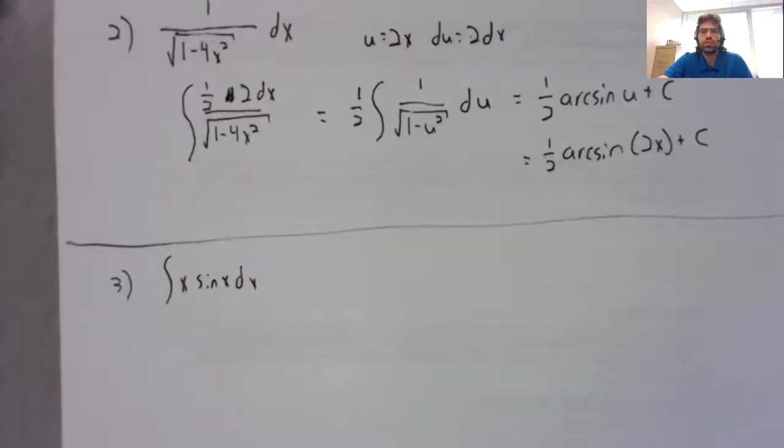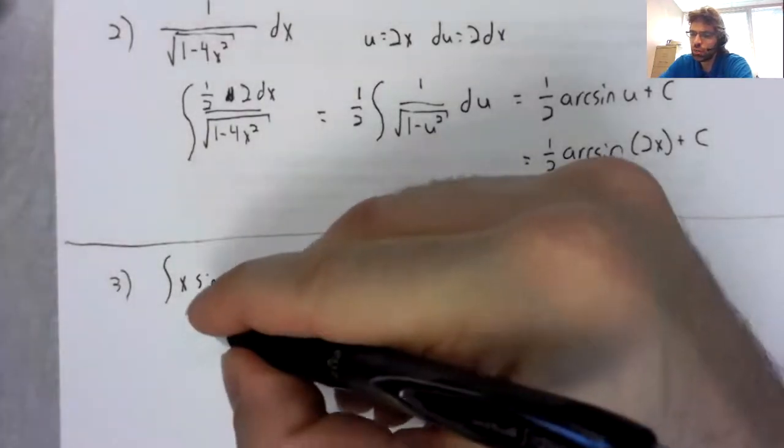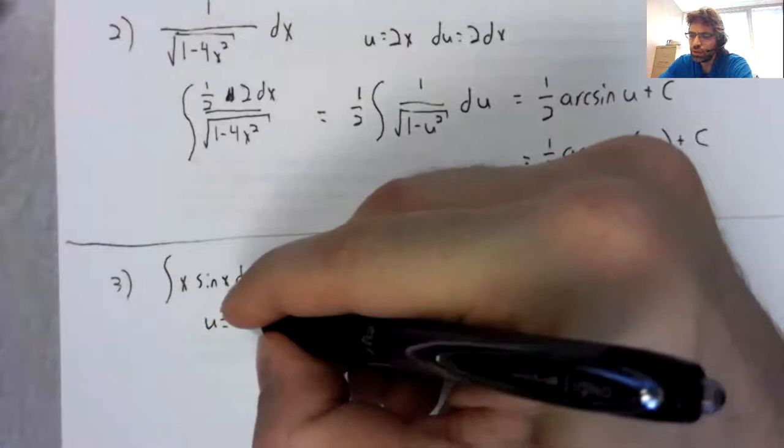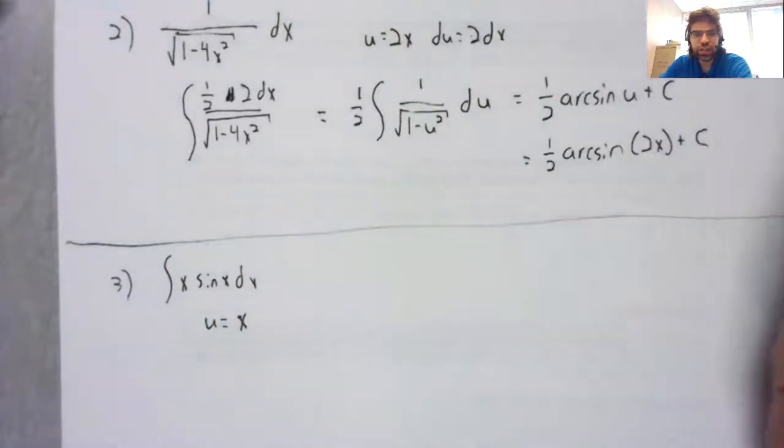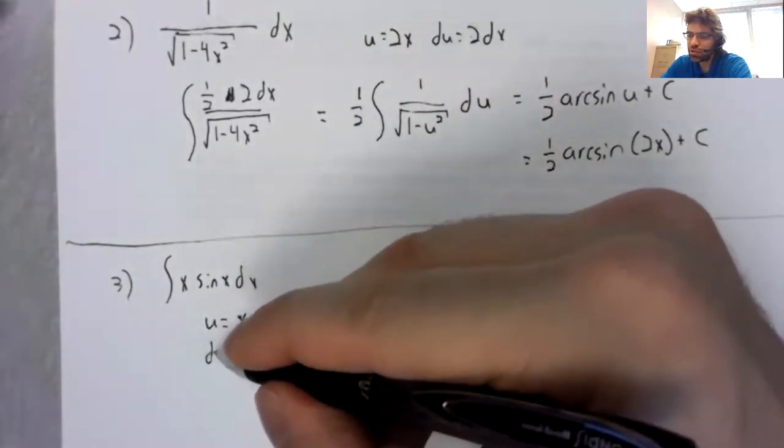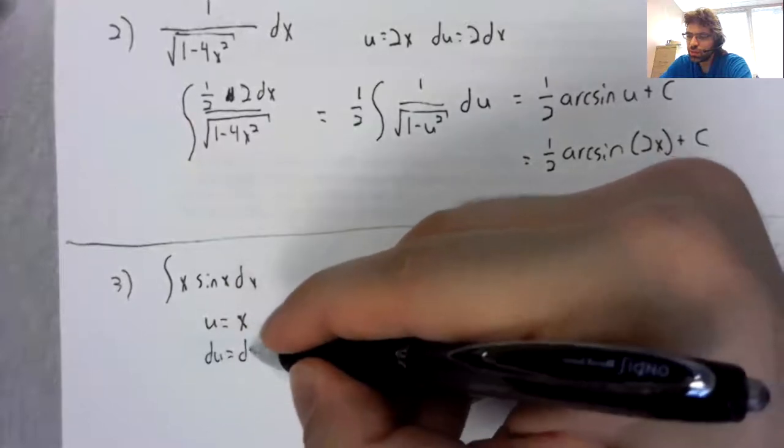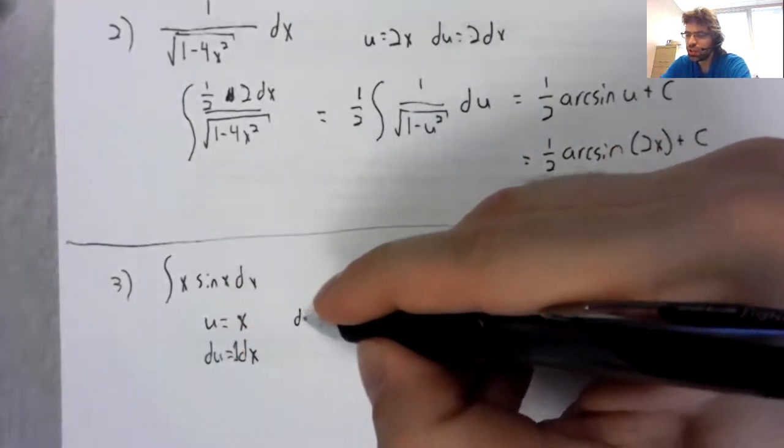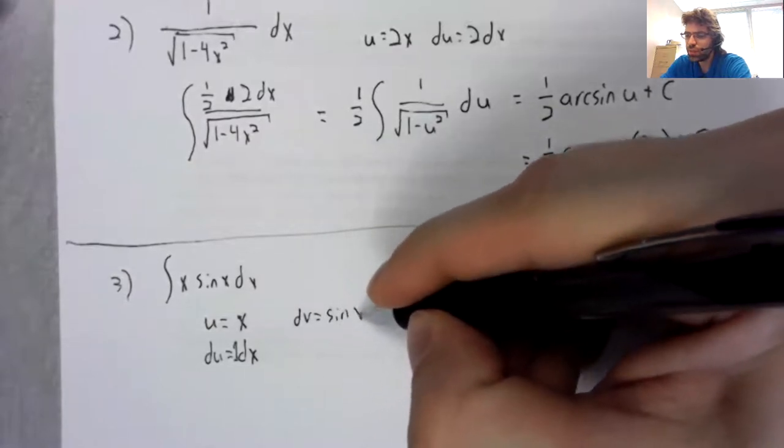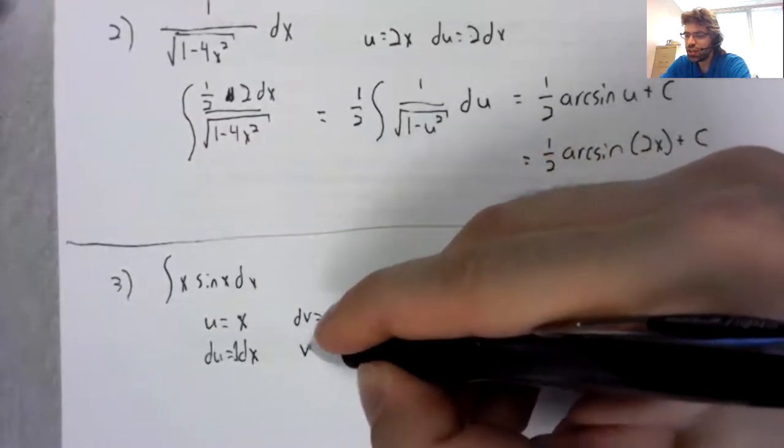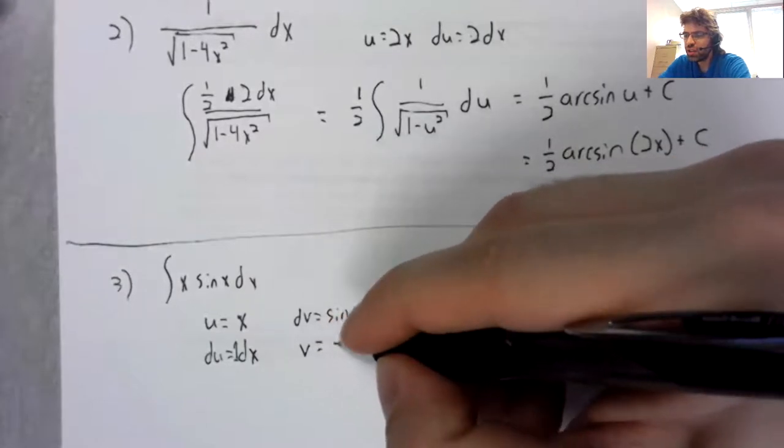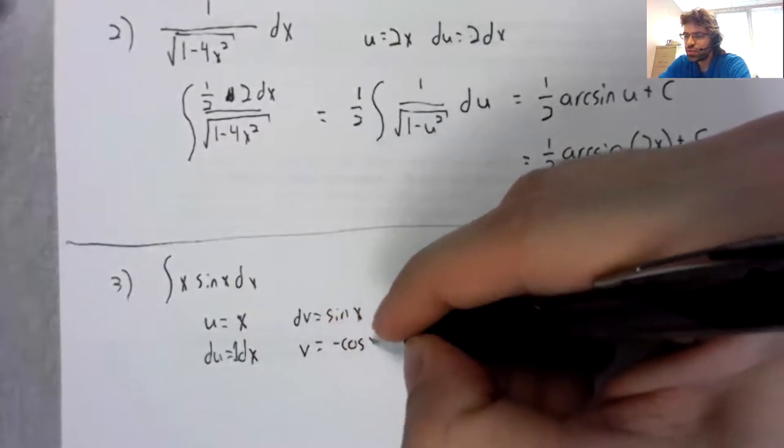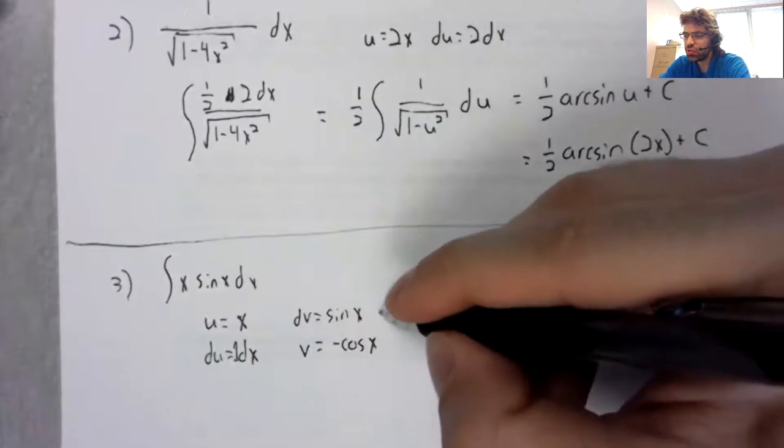This is a classic integration by parts problem. If we let u be x, du is 1dx, we can let dv be the sine, then v is the negative cosine.